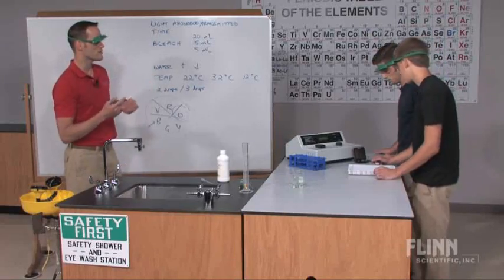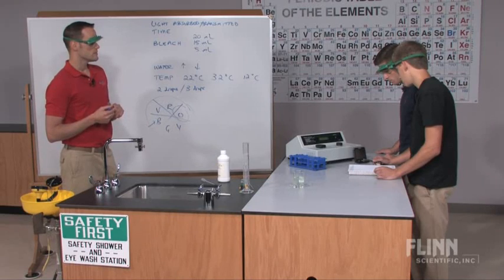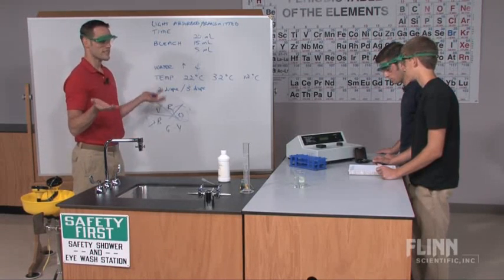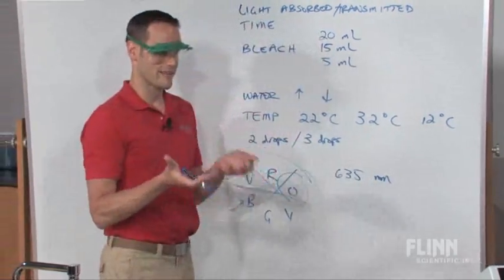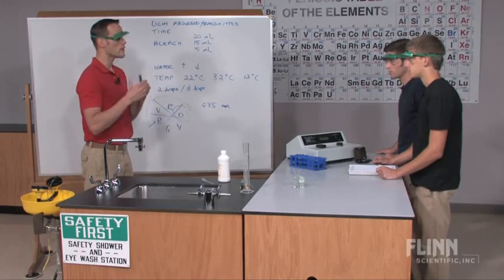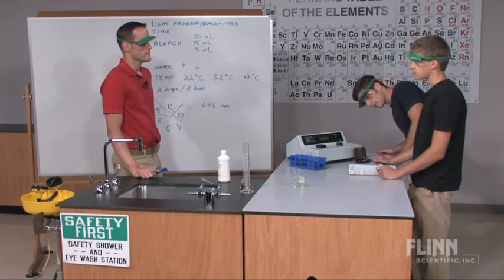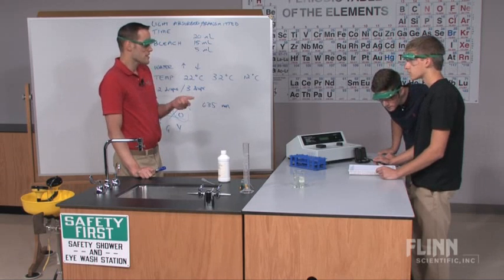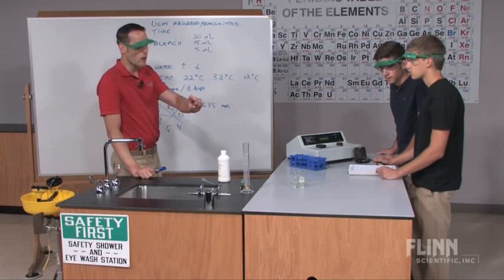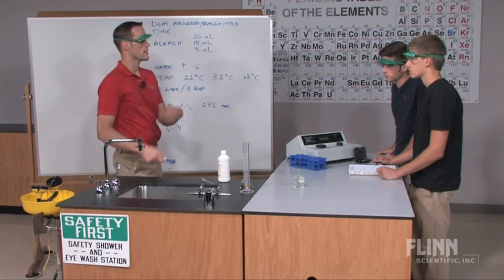Orange wavelengths correspond to about 600–650 nm on the Spec 20, so we'll pick 635 nm as our analytical wavelength. Students also know you have to blank the instrument first with something similar to the working solution. The bleached solution isn't truly colorless — bleach has a slight yellow cast — so students will use that faded solution as their blank to zero out the instrument before running trials.